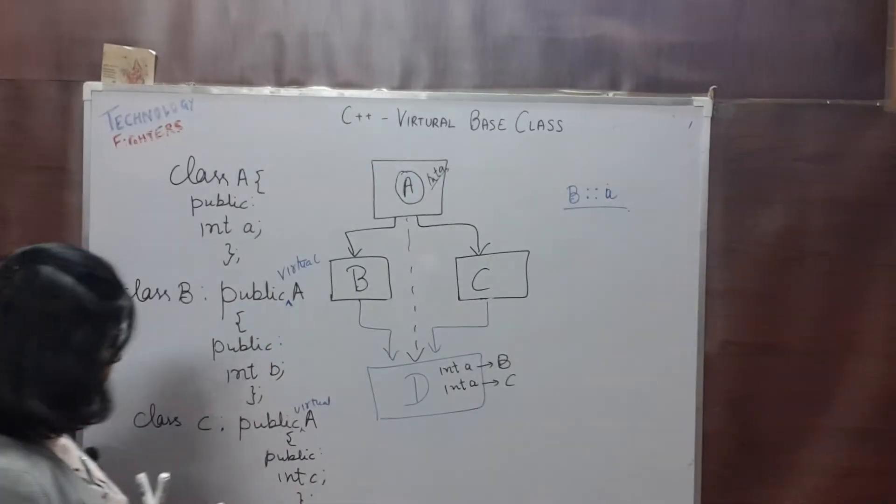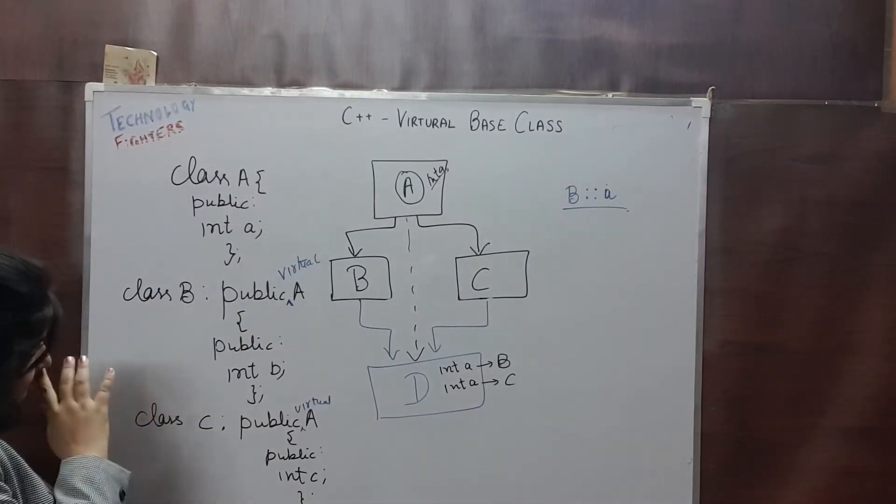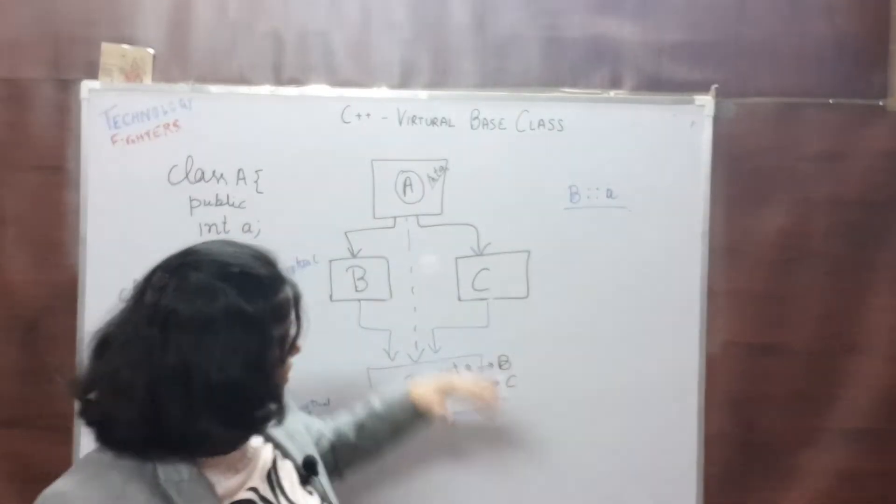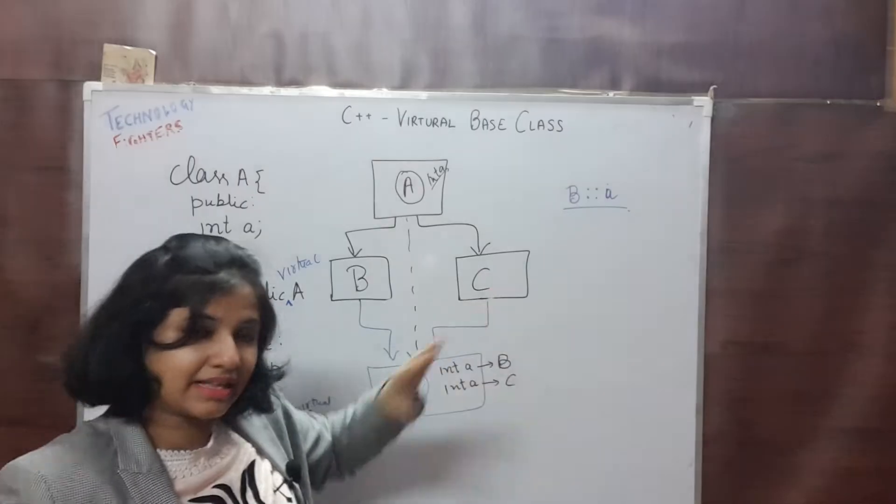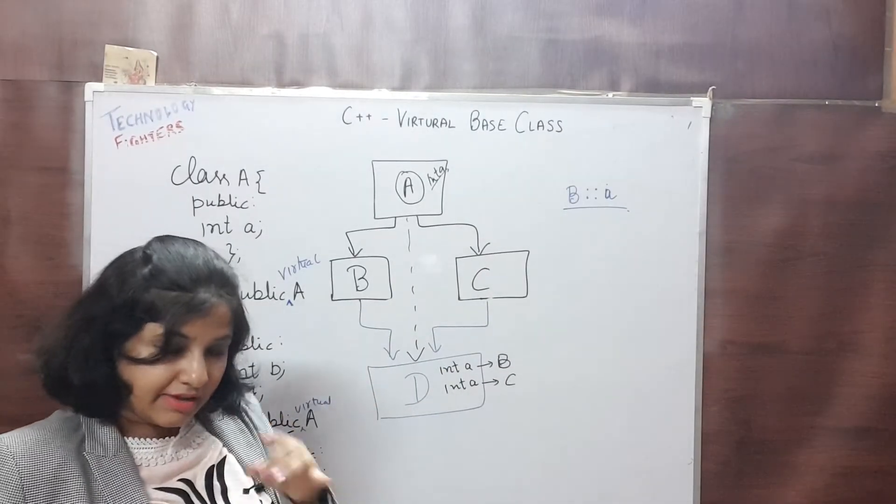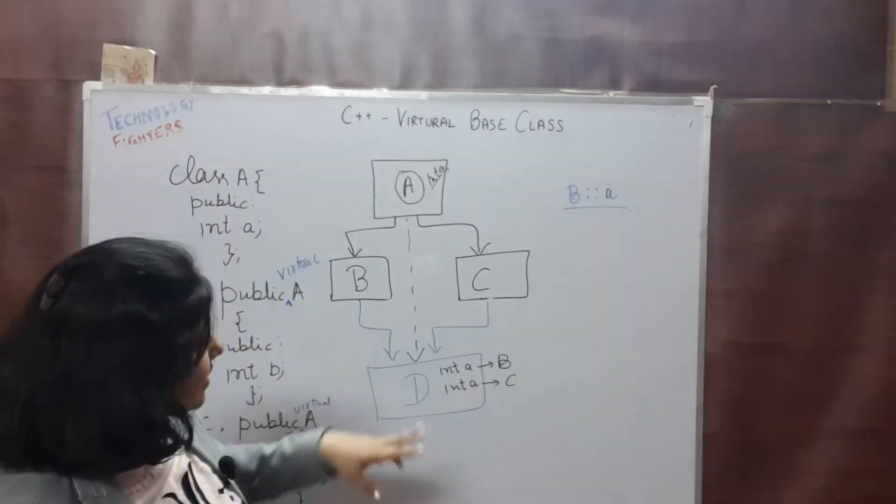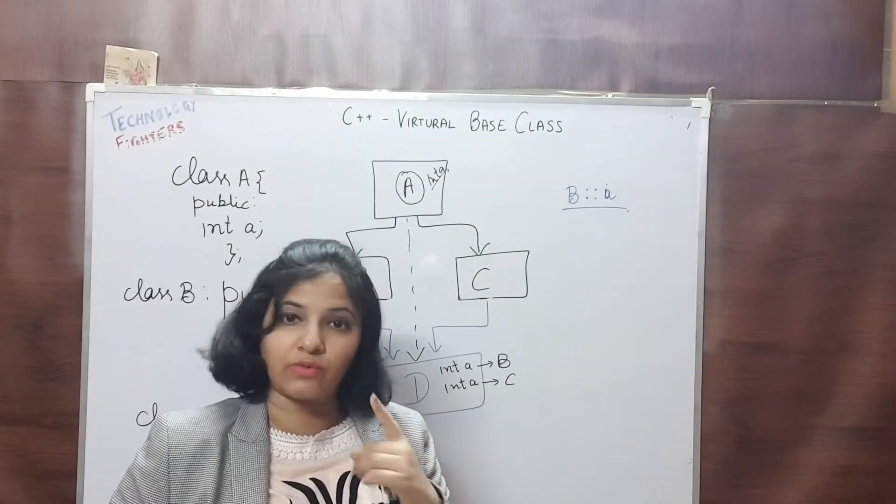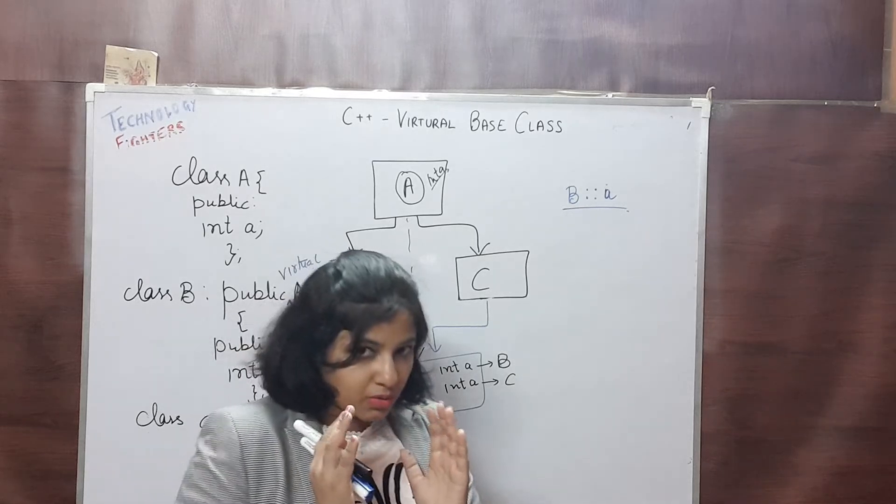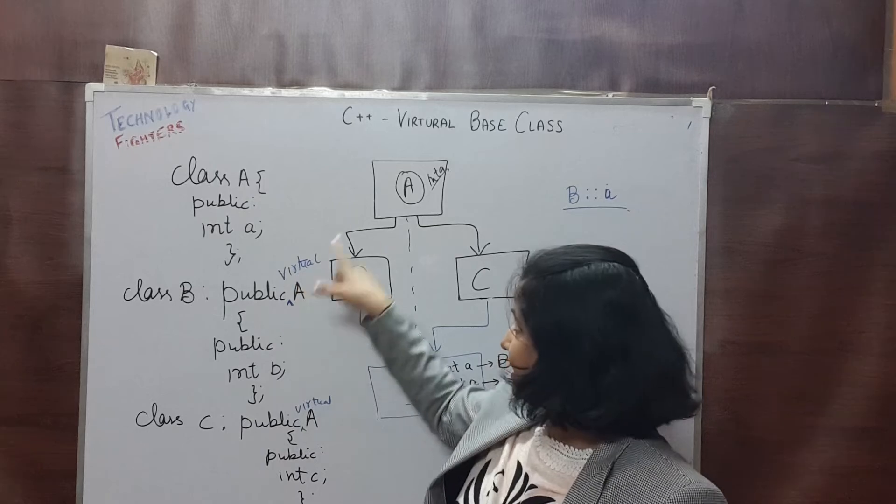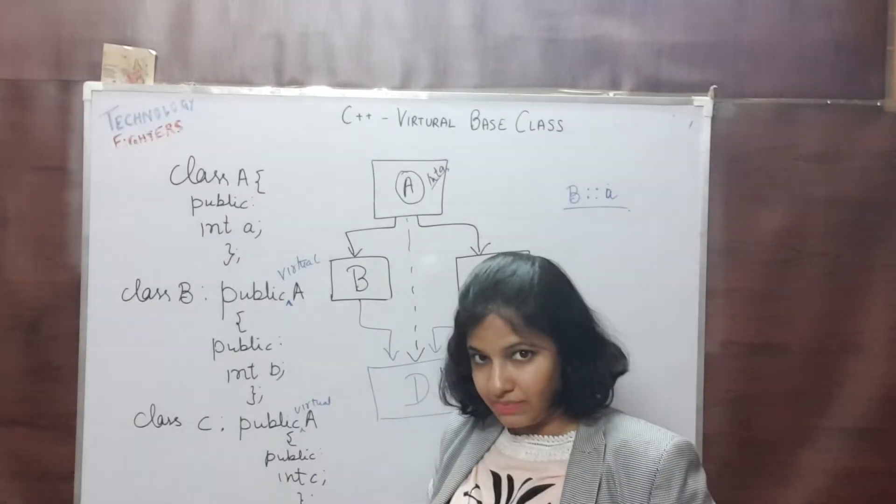Up to now it's clear that if we have B and C, then there is no issue. But if we include class D, then we will get two copies of class A, one through B and one through C. To stop this incident, what we can do? We will make class A as the virtual base class.